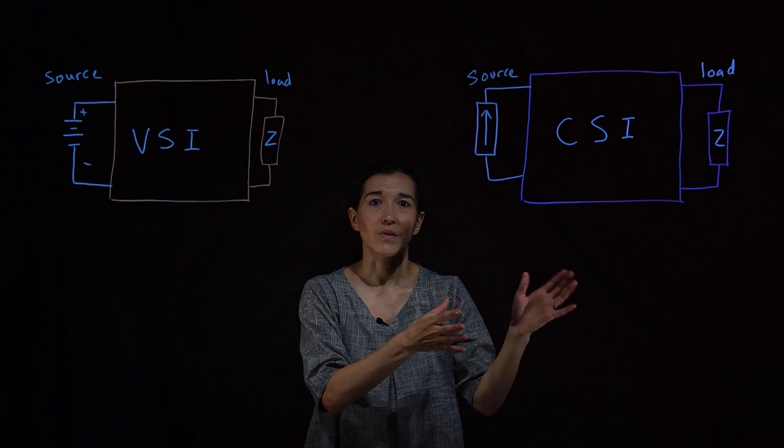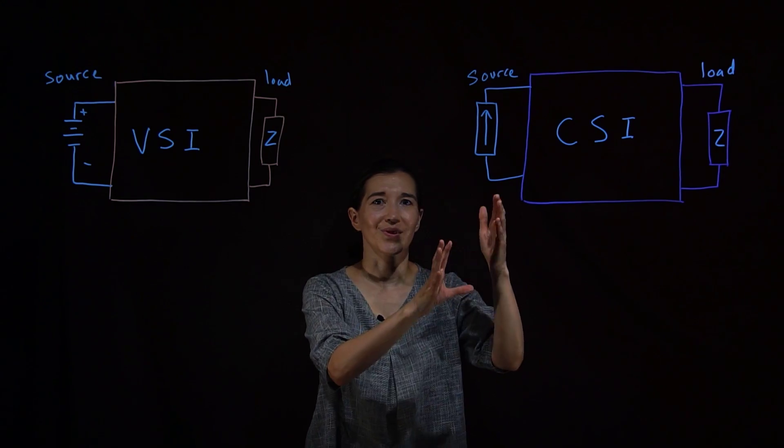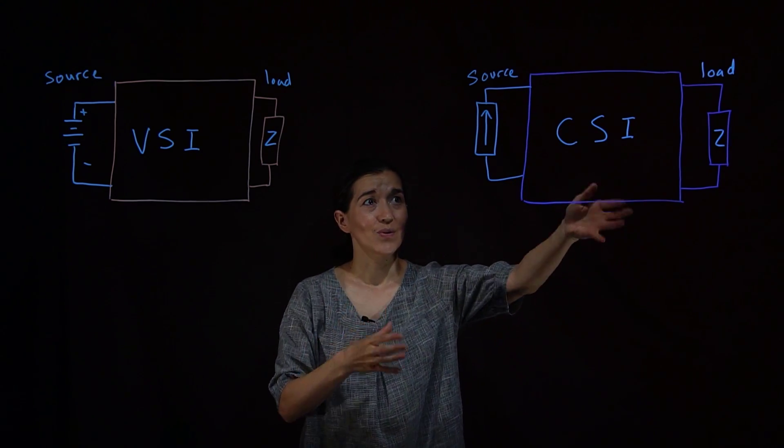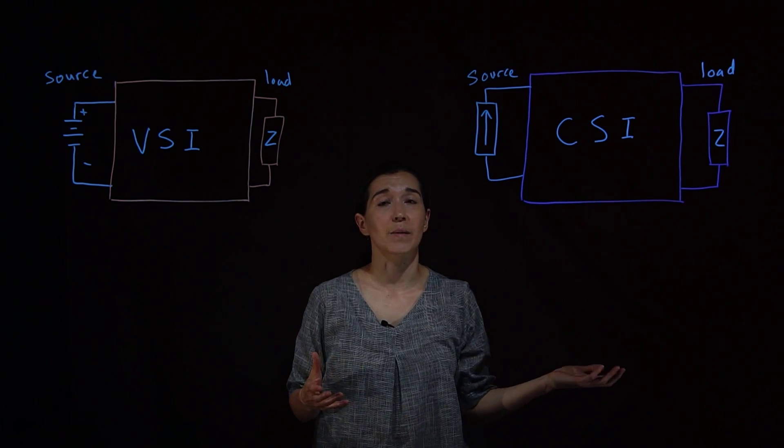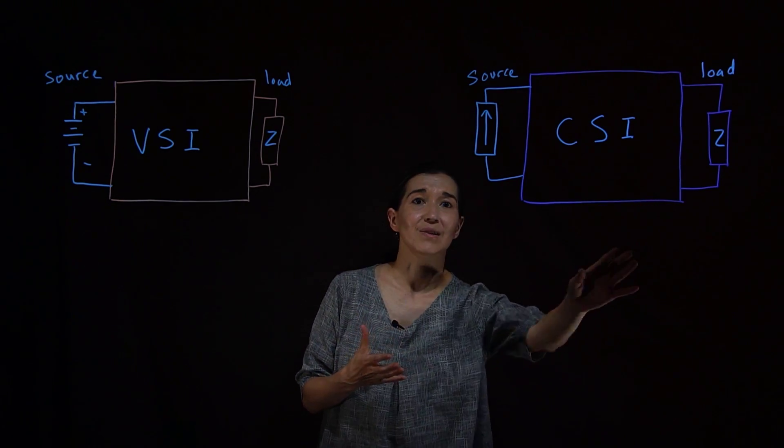So the current source inverter kind of chops up the source into different positive negative modes over the load. And then the voltage characteristics of the load are determined by the impedance here. We're just using a Z.